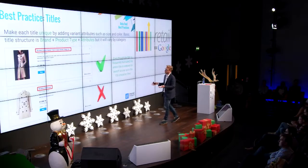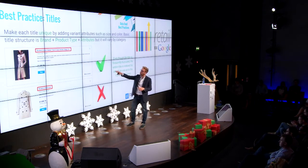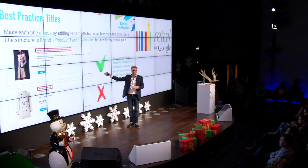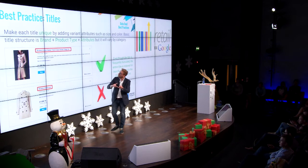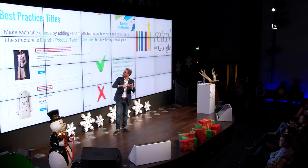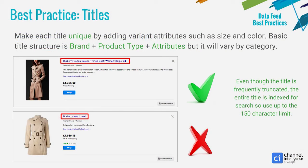When you do have a PLA ad format where you can see the whole title — like shopping for a Burberry trench coat — including material, gender, color, and size means someone seeing that PLA is going to be quite informed. When they make a click, it's going to be a more qualified click and they're going to be more likely to convert. As opposed to a title that just says 'Burberry trench coat' — they might click through and find their size isn't available. So the first, more detailed title, is an example of what to do.